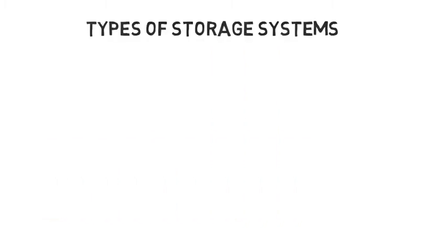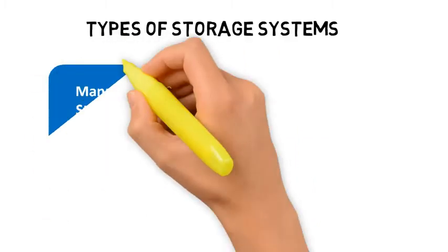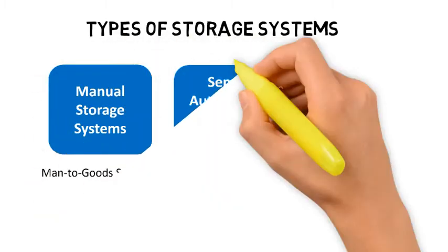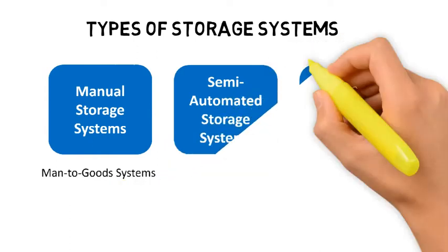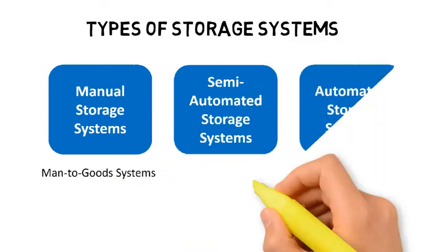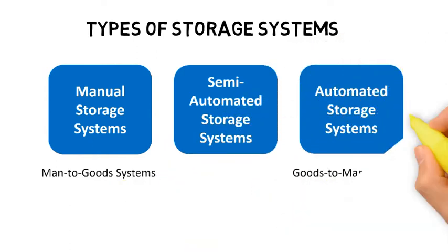There are various types of warehouse systems available. These can be broadly divided into three categories: manual storage systems, also known as man-to-goods systems; semi-automated storage systems; and automated storage systems, also known as goods-to-man systems.